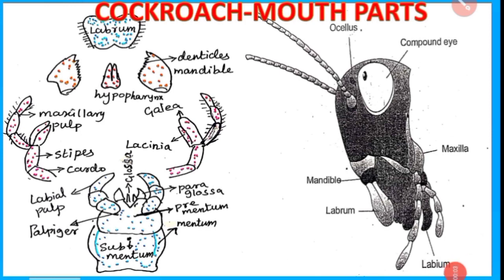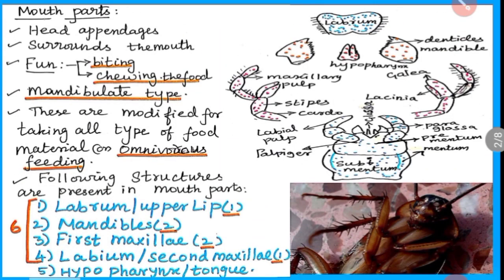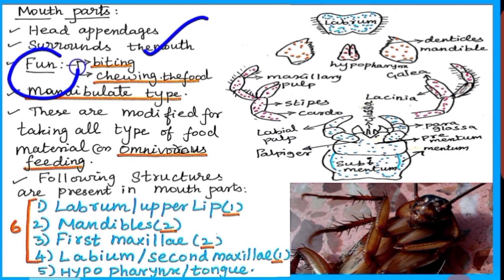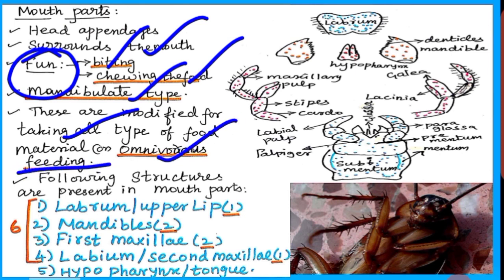Hi children, in this video lecture, we are going to discuss about cockroach mouthparts. Mouthparts are head appendages. Mouthparts surround the mouth. The function of mouthparts is biting and chewing the food. Hence, it is considered to be a mandibulate type. These are modified for taking all types of food material, hence it is considered to be an omnivorous feeding.